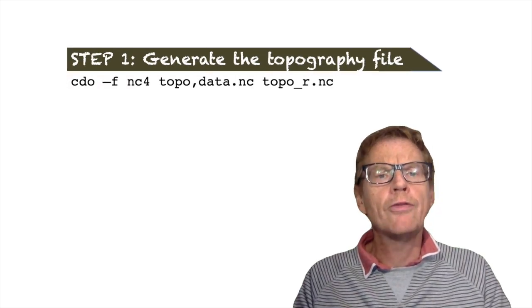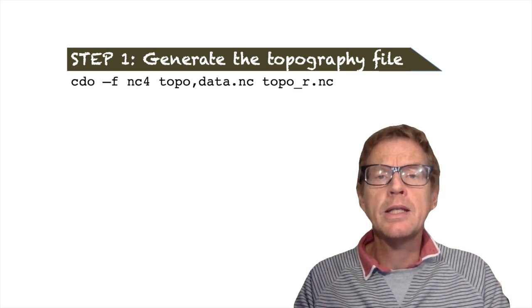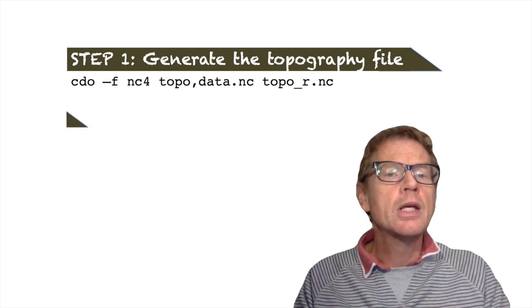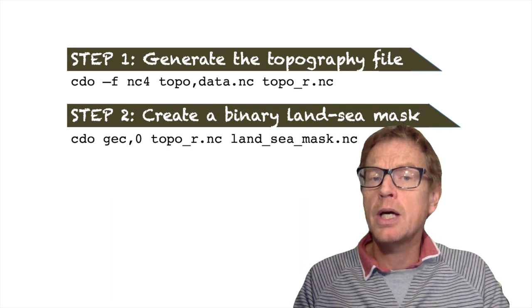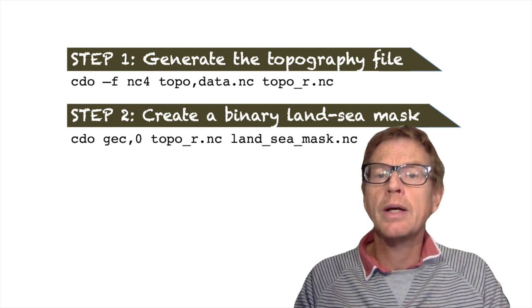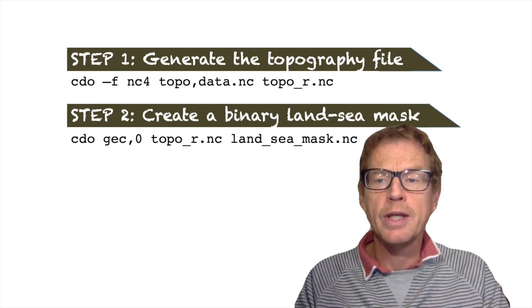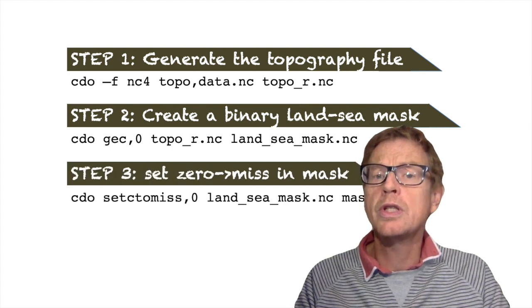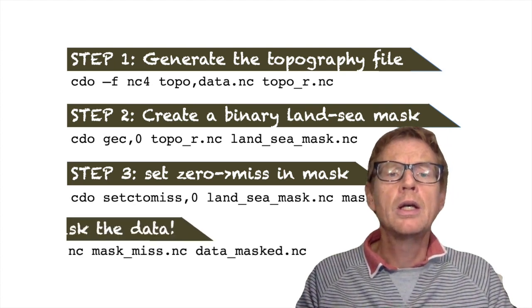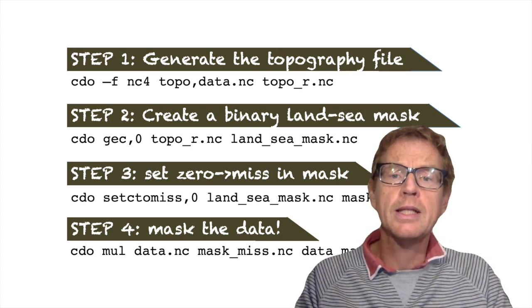So let's just summarize. We have four steps. The first step was to generate the topographical file, which can be remapped on the target data sets grid by passing the data set as an argument to the topo command. Step two then was to create a binary land sea mask and we use the logical function greater than or equal to a constant if we want to mask out and keep the land points or less than a constant with an argument of zero if we want to retain the sea points. The third step then was to set all the zero points to missing in this mask by using setCtomiss. And the last step then was to multiply the data set by this new mask to give us the final masked data for easy steps.